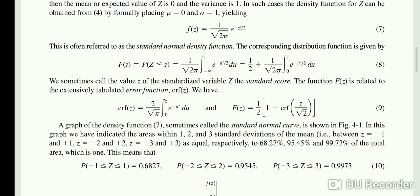Sometimes the value of the standardized variable z is called the standard score. The function F(z) is related to the extensively tabulated error function. The error function erf(z) equals 2 over square root π, integration from 0 to z, e to the power minus u squared du. We can show that F(z) equals one-half times (1 plus erf(z over square root 2)) from equation number 9.